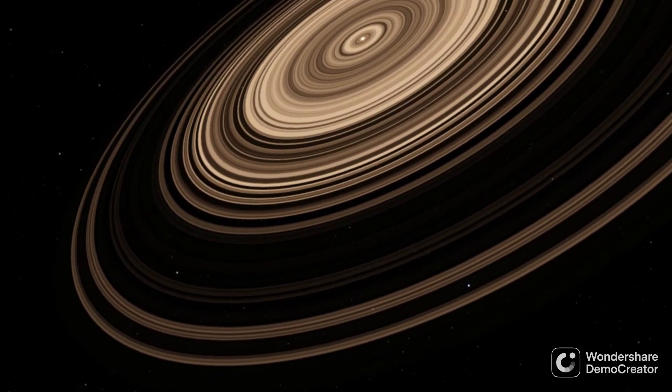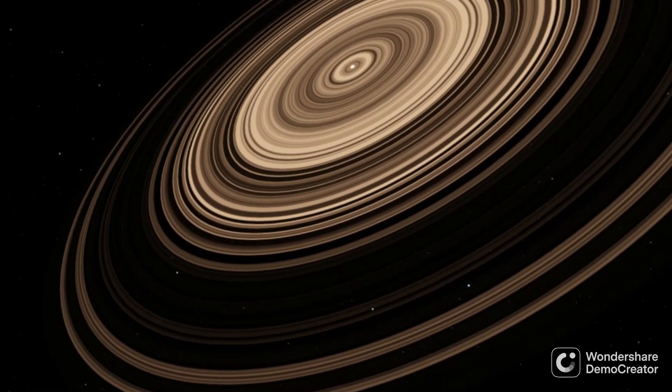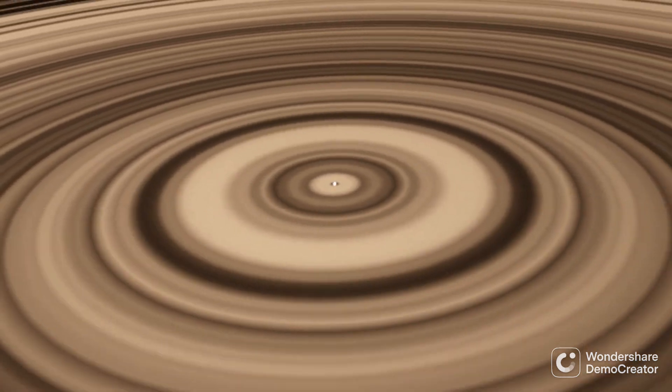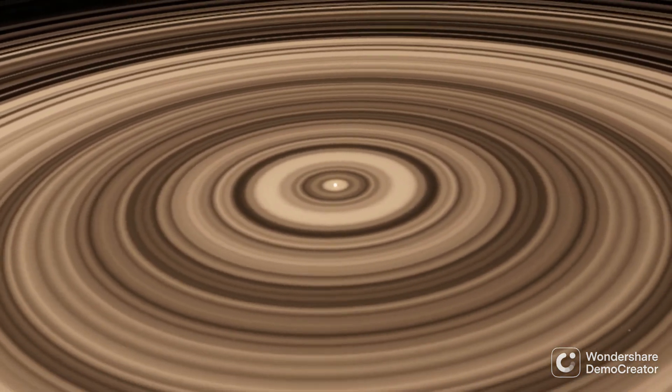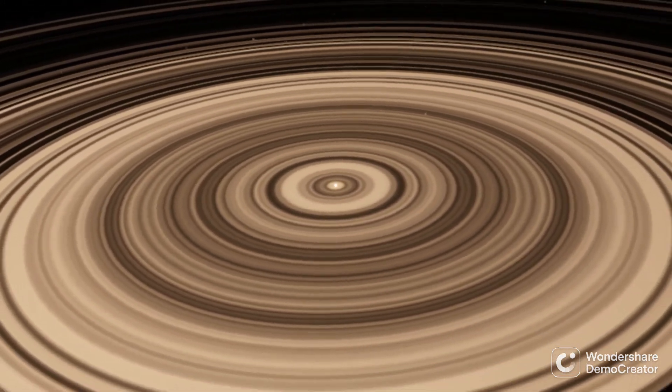J1407b is one of the most well-known planets outside the solar system, and for good reason. The planet is thought to host one of the biggest ring systems in the known universe, earning it the nickname the Super Saturn.